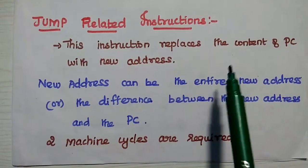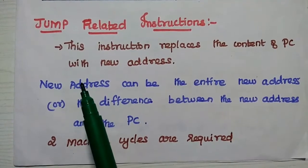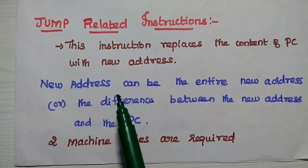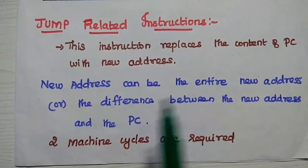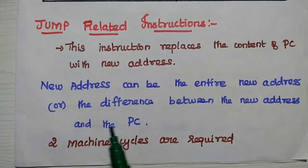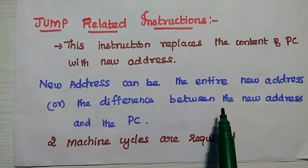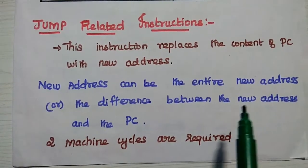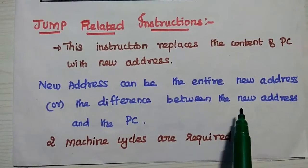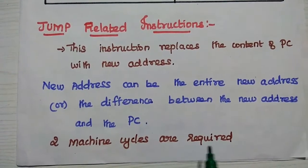Jump-related instructions replace the content of the program counter with a new address, meaning permanent changes. The new address can be either the entire new address or the difference between the new address and the program counter. The jump instruction holds that address — it can be a complete new address where we want to transfer program control, or the difference between the program counter and the new address. Two machine cycles are needed to execute jump instructions.